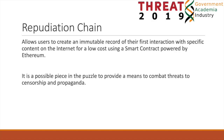The reputation chain, which is the developed artifact, allows users to create an immutable record of their first interaction with specific content. It operates at low cost via a smart contract powered by Ethereum and the Ethereum Virtual Machine. I believe it provides a possible means to combat threats to censorship and corrupt data.